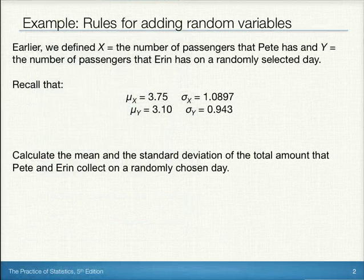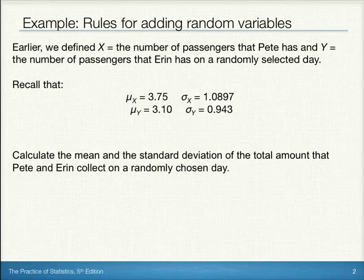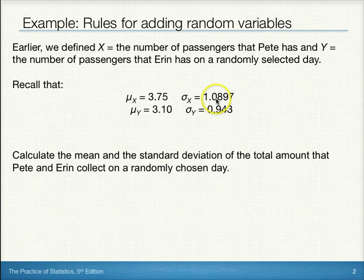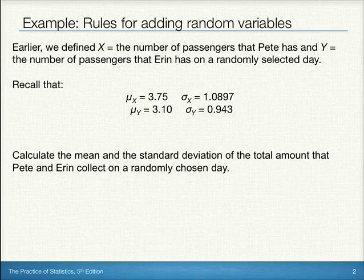Earlier we defined X to be the number of passengers that Pete has and Y to be the number of passengers that Aaron has on a randomly selected day. Recall that the mean for X was 3.75 with standard deviation of 1.0897, and the mean of Y was 3.10 with standard deviation of 0.943. We want to calculate the mean and standard deviation of the total amount that Pete and Aaron collect on a randomly chosen day.